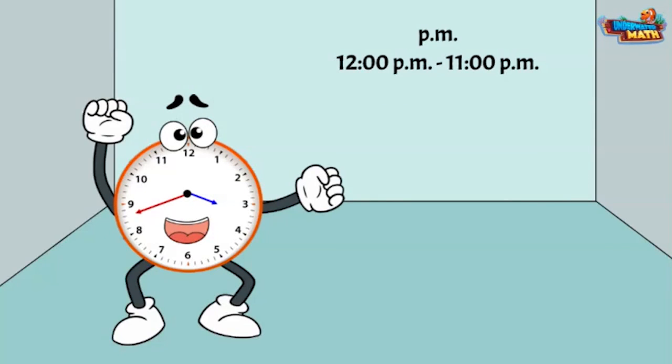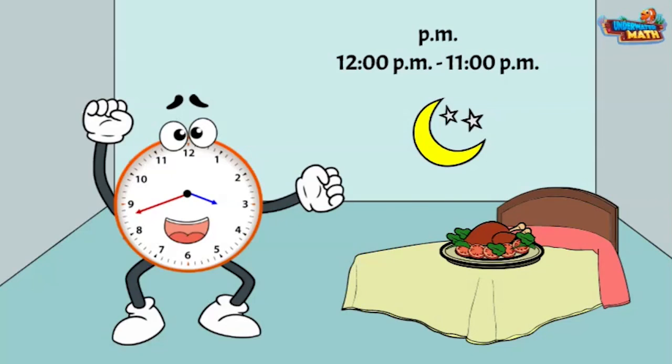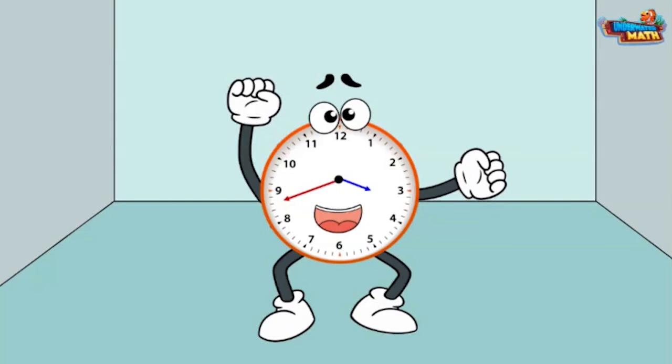The label PM represents the hours between 12 o'clock PM and 11 o'clock PM. The afternoon is during this time. The moon might shine, we eat dinner, and we go to bed. Time to get going! Thanks for stopping by.